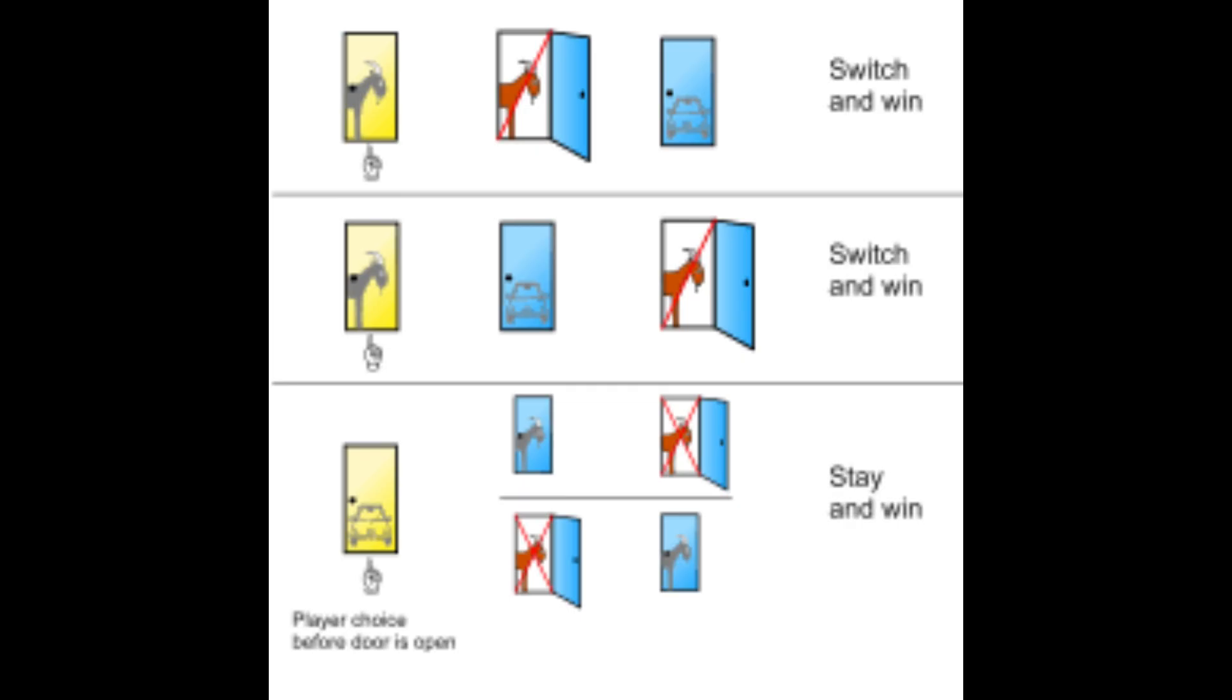Now, after Monty opens a door with a goat, he's giving you more information. This is where things get interesting. If your original pick was a goat, which happens 66.67% of the time, switching will win you the car. If your original pick was the car, which happens 33.33% of the time, switching will make you lose.